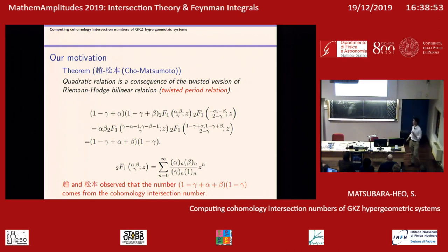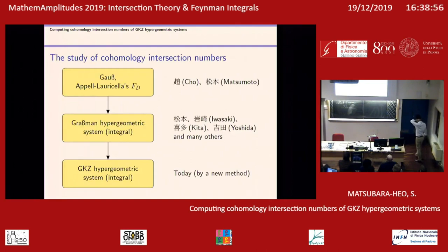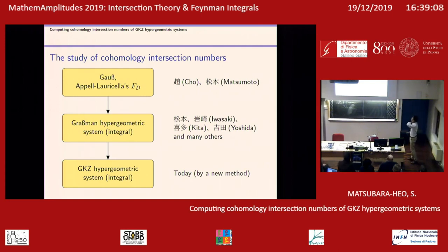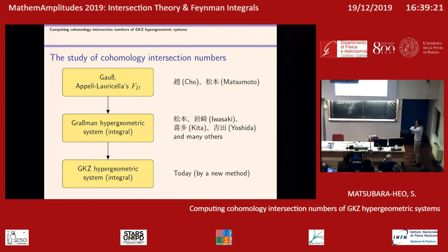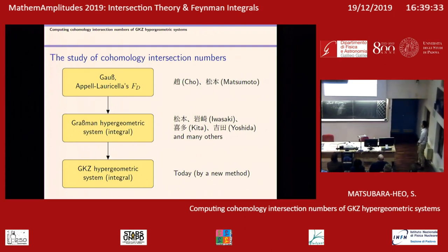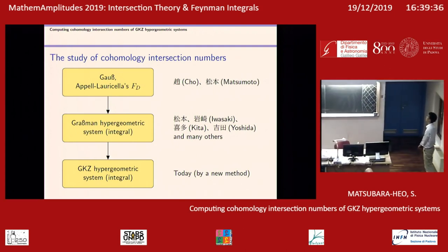A typical example of such an identity involves the Gauss hypergeometric series 2F1. This is a classical example and interesting in its own right. But the important point of view of Cho–Matsumoto is that the right-hand side is essentially the cohomology intersection number. So they developed a systematic method of deriving this type of functional identity. This is my motivation — I want to explain what the twisted period relation is.